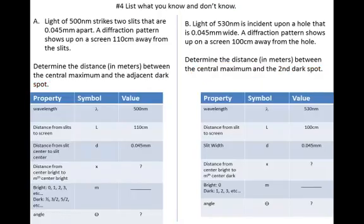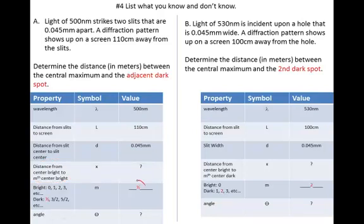Let's list the things we know and don't know. For Example A: wavelength is 500 nanometers, L is 110 centimeters, D is 0.045 millimeters. We don't know X — the distance from the center bright to the m-th center bright. We do know m, which is 1/2 because it's asking for the adjacent dark spot. We're not concerned with the angle in this particular problem.